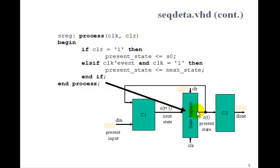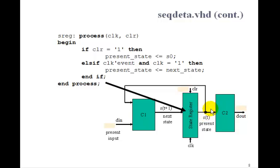Then we'll have a separate process for the state registers. The inputs will be clock and clear. If clear equals 1, the present state gets assigned S0. Else on the rising edge of the clock, present state just gets next state. This is the only sequential part of this whole state machine.